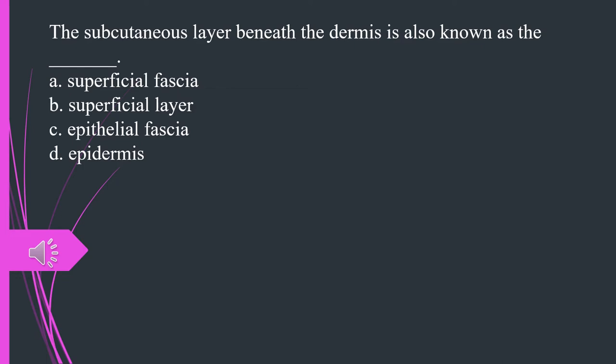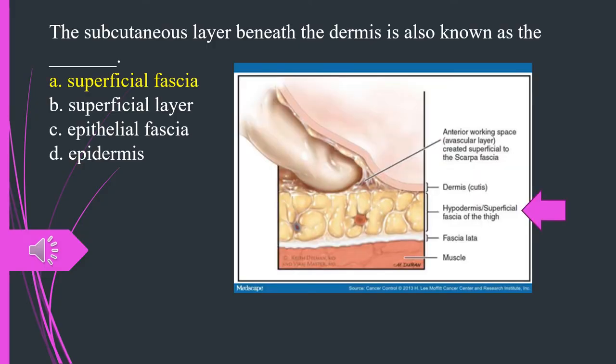The subcutaneous layer beneath the dermis is also known as what? A. Superficial fascia. B. Superficial layer. C. Epithelial fascia. D. Epidermis. The answer is A. Superficial fascia.